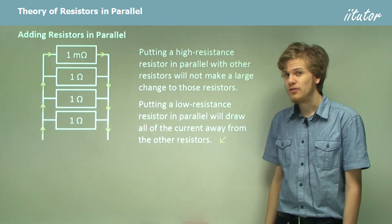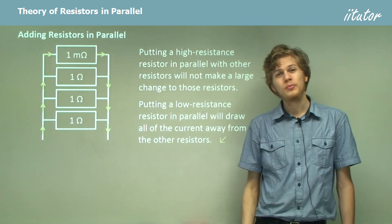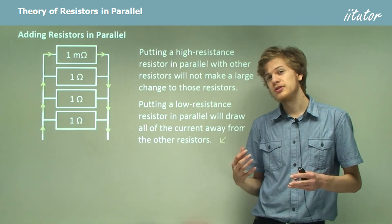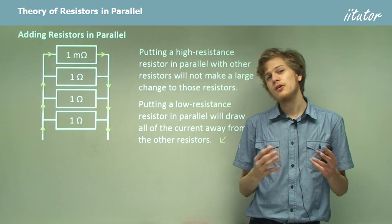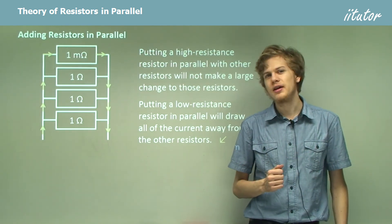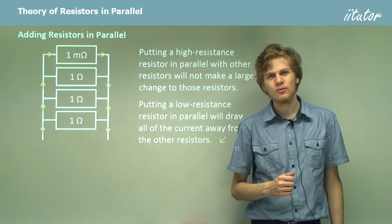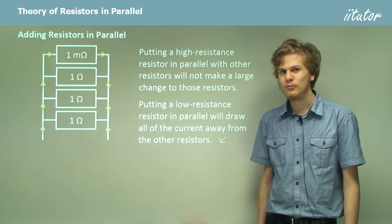So this is the end of the theory. We've learned about the voltage drop across resistors in parallel and the current through resistors in parallel. Let's go on to some questions to check our understanding.